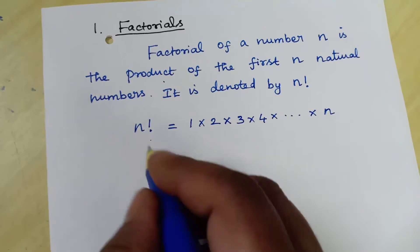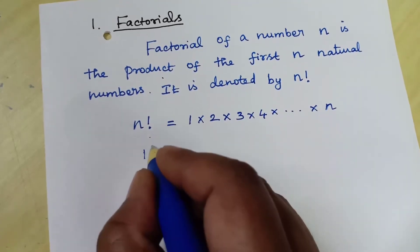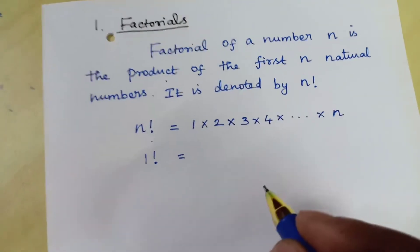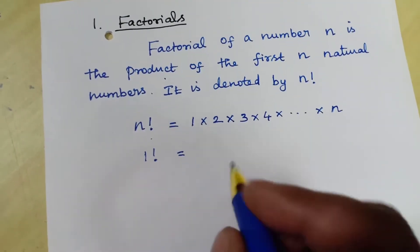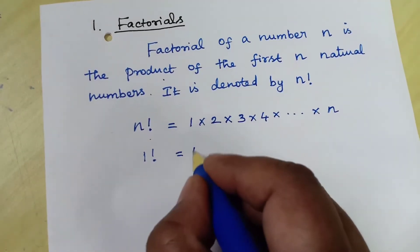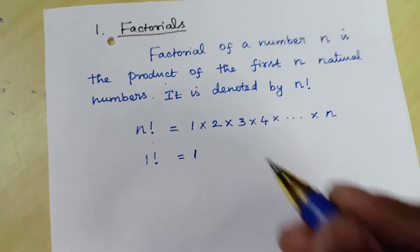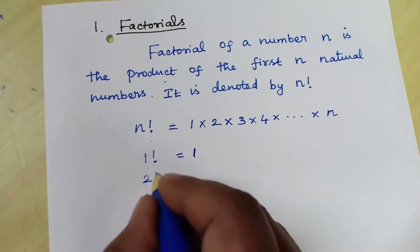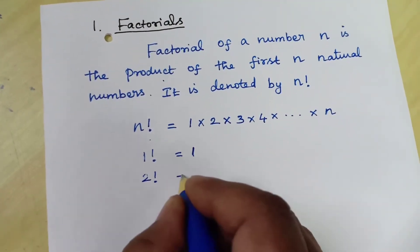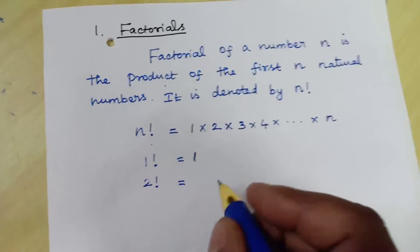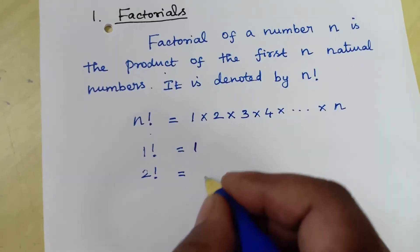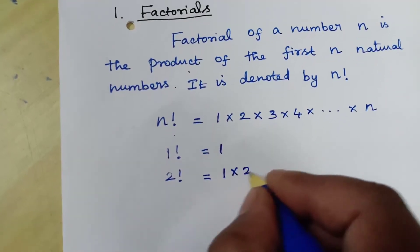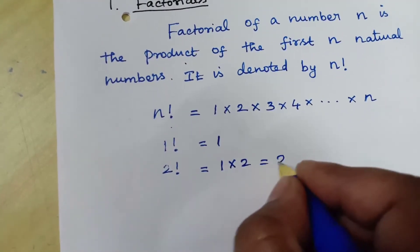So 1 factorial — the product of the first 1 natural number, that is 1 alone — so 1 factorial is 1. Next, 2 factorial is the product of the first 2 natural numbers, that is 1 × 2, which is equal to 2.